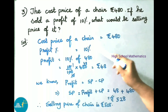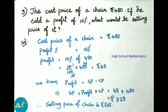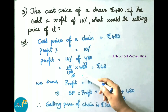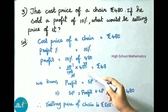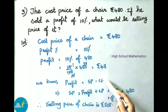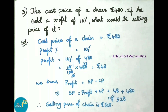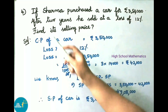Profit equals 10 percent of 480, that is 10 by 100 into 480, which gives 48 rupees. We know profit equals selling price minus cost price, so selling price equals profit plus cost price. That equals 48 plus 480 rupees, which gives 528 rupees. Therefore selling price of the chair is 528 rupees.